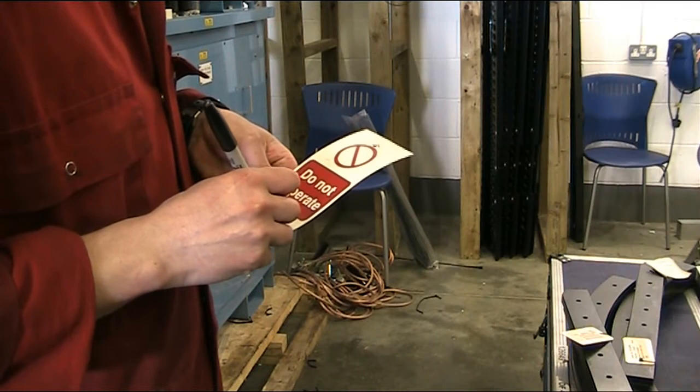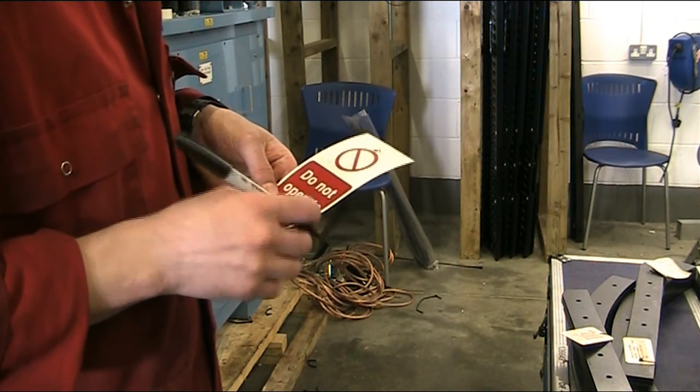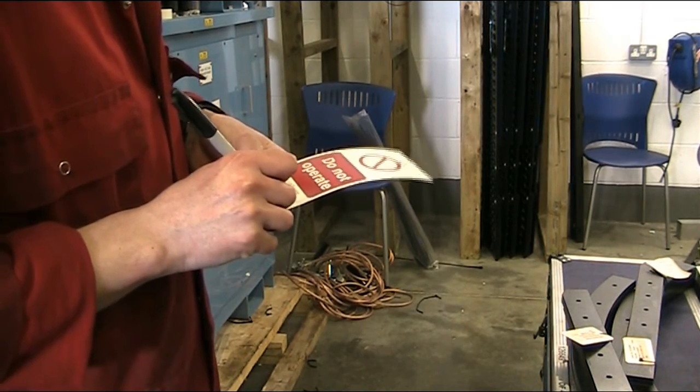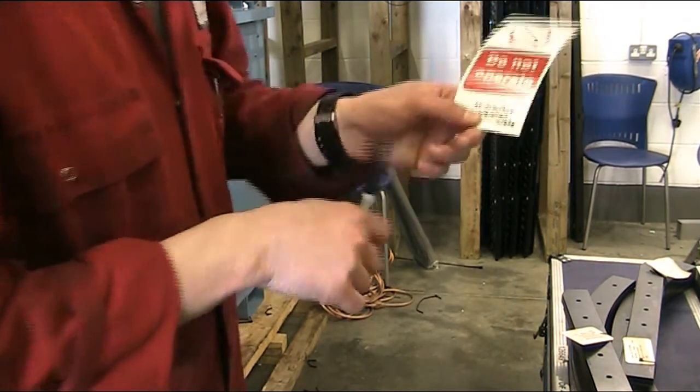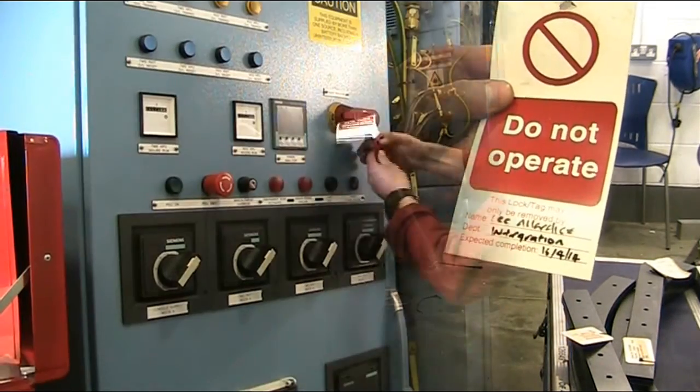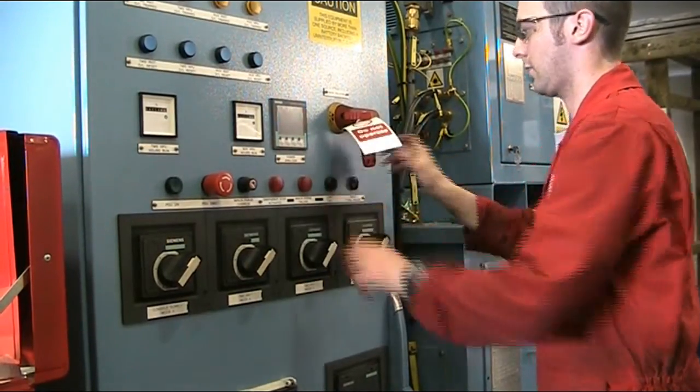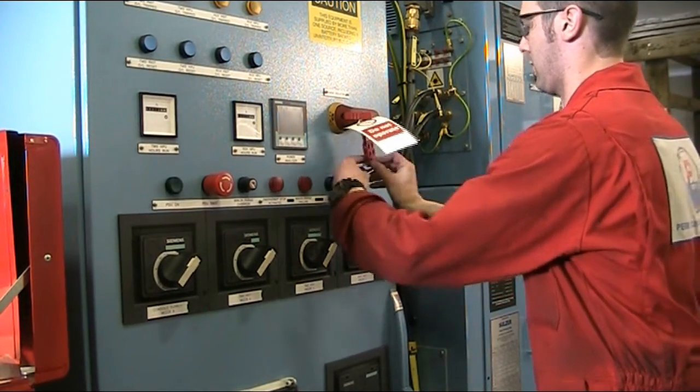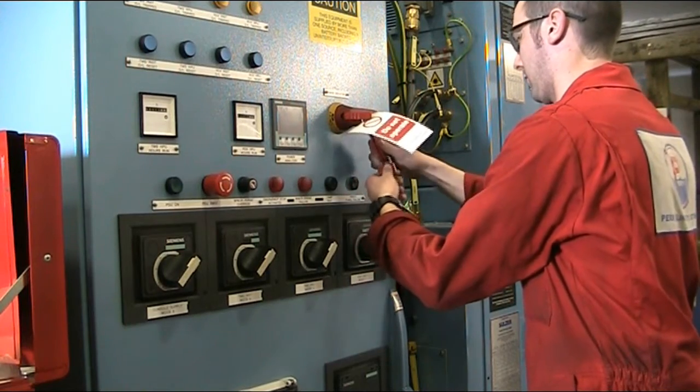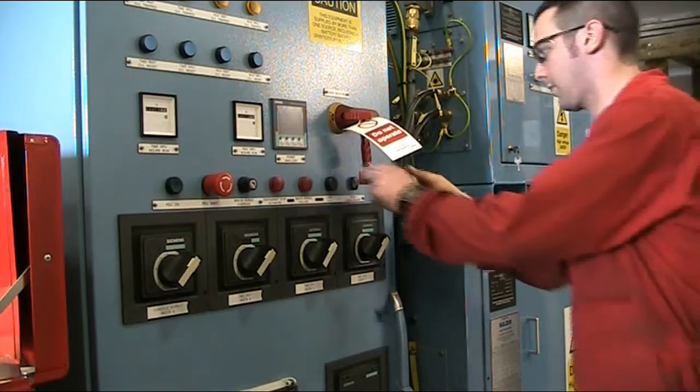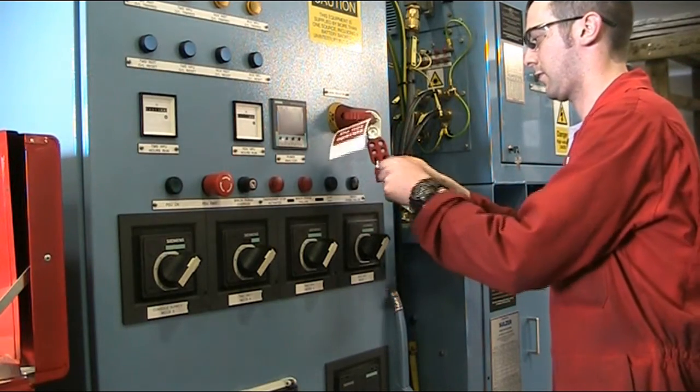We will now see the engineer switching off and isolating the power distribution unit by attaching padlocks to the main breaker. Warning labels recording the time, date, permit to work number, and a brief description of the nature of the work are attached to the lock off point. Exact procedures vary but a two lock system with the worker applying a lock and the supervisor or person in charge of the work applying a lock is generally accepted as best practice.